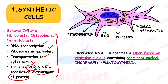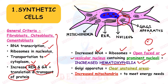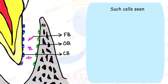On stained sections, increased RNA and ribosomes give an appearance of an open-faced or vesicular nucleus with prominent nuclei. The nucleus stains dark due to increased hematoxylin affinity. Golgi apparatus appears as clear unstained areas, and increased mitochondria can be seen to meet the cell's high energy needs.